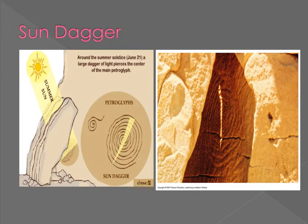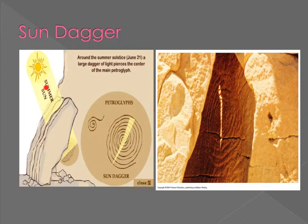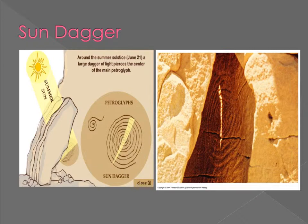Most of these structures correlate with celestial phenomena such as the solstices. The Sun Dagger is a hole in a rock inside a cave with a picture whose meaning is uncertain, but only on the summer solstice does sunlight shine through and make a dagger that fills the space perfectly. This site is on Navajo land and requires special permission to visit.